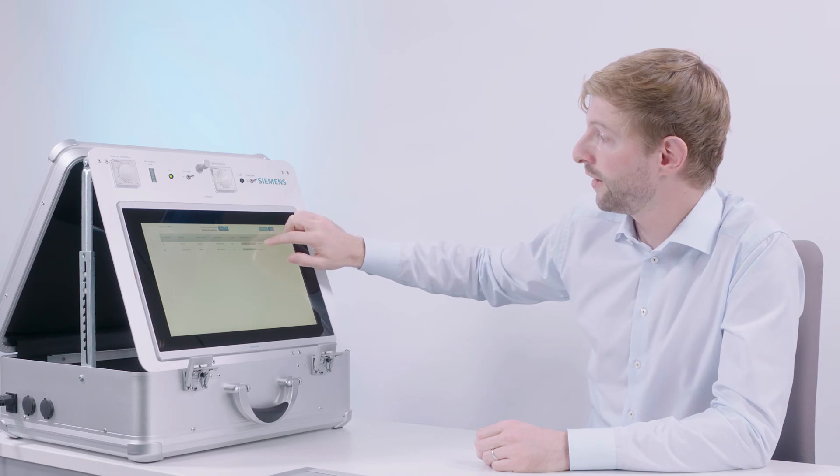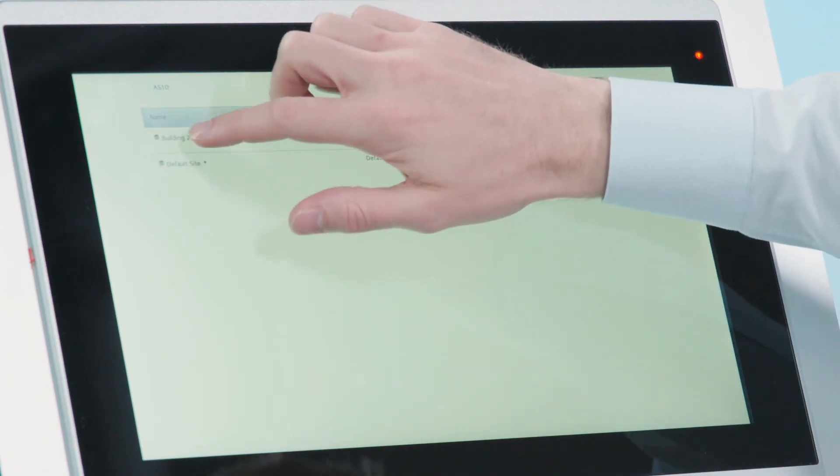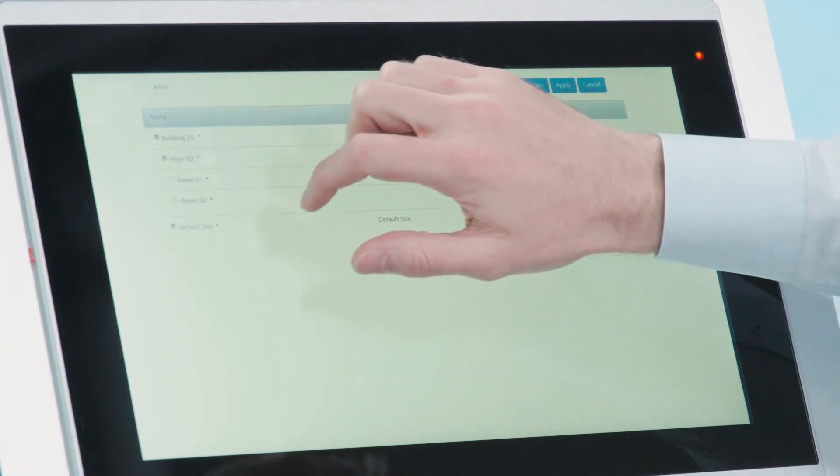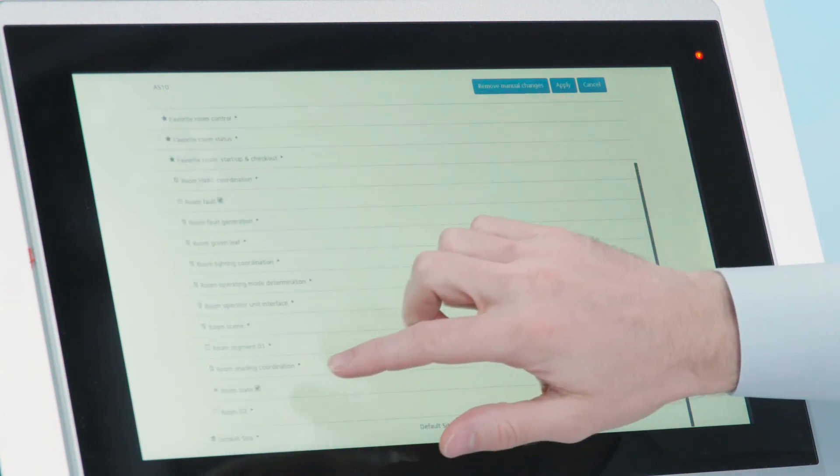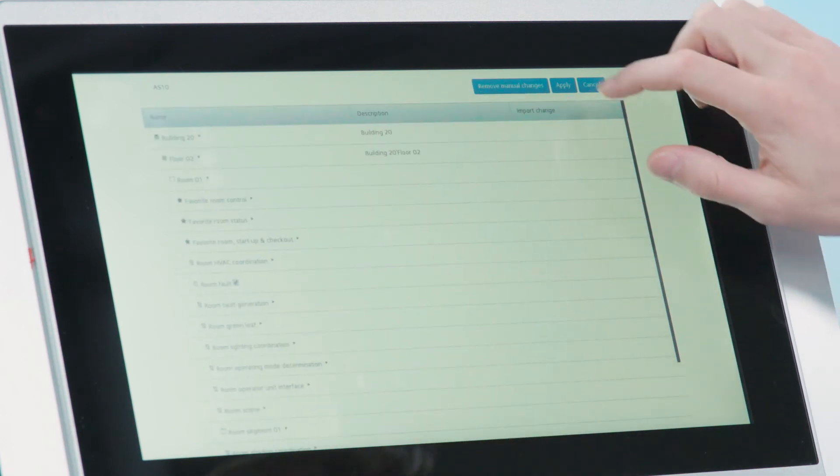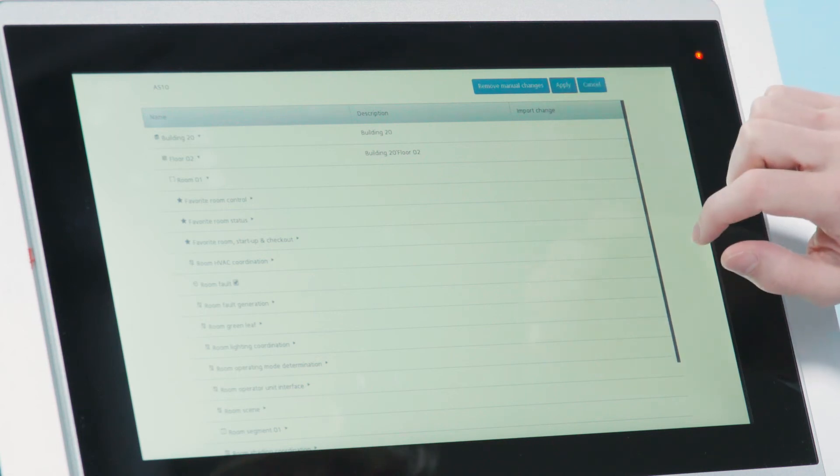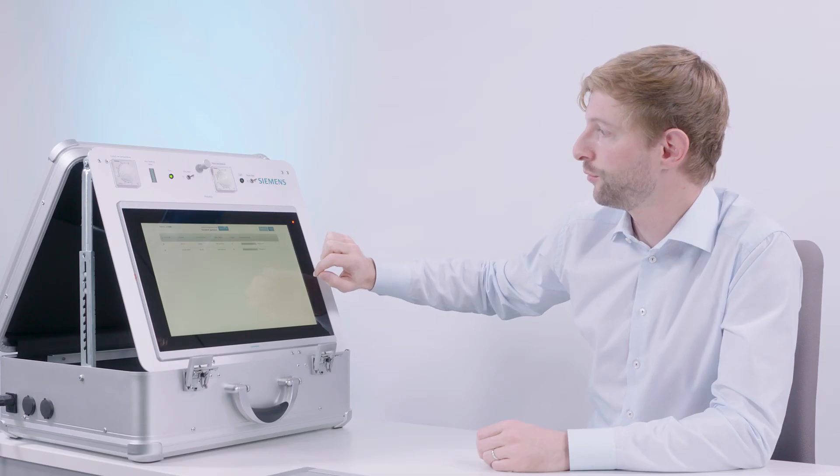Should this predefined selection not satisfy the needs of your particular project, you can always navigate via Advanced to a detailed points list. There, you can select points simply by checking the boxes next to them. Once you're done with that, you can confirm your selection by hitting Apply, which brings you back to the main integration screen.